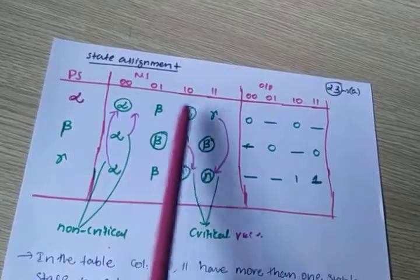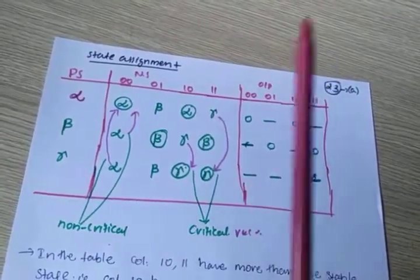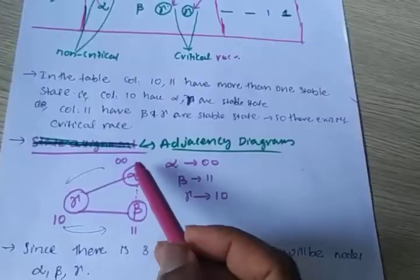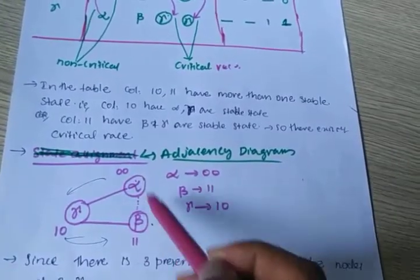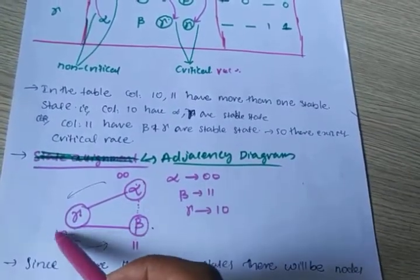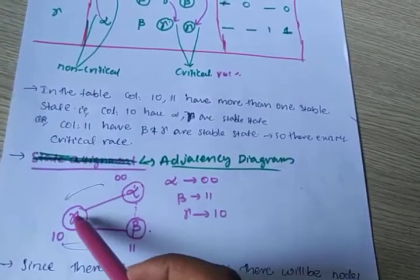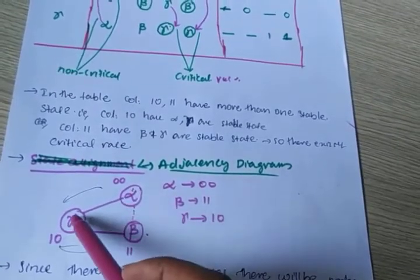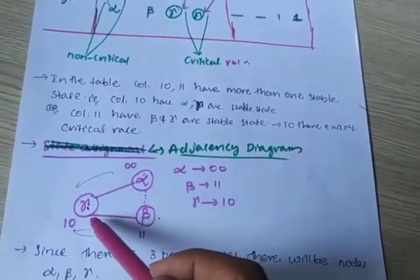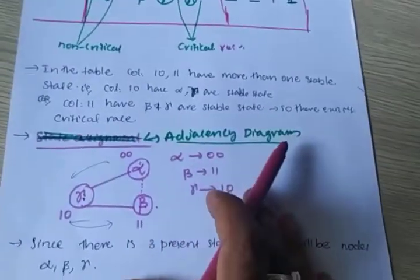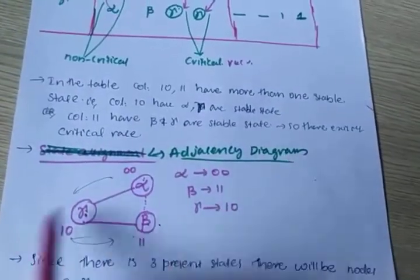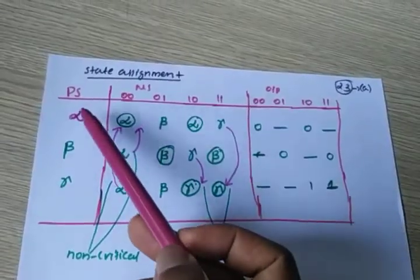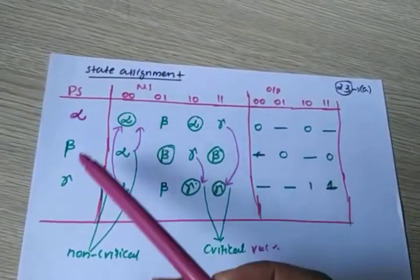Now consider column 1-1: gamma, gamma, beta, beta. Consider alpha and gamma — we can assume that alpha and gamma are adjacent states. So we write: alpha and gamma are adjacent, represented by a bold line. Beta and gamma are also adjacent, represented by a bold line.